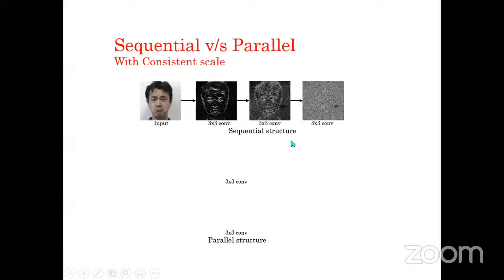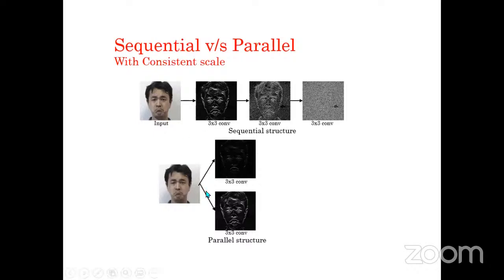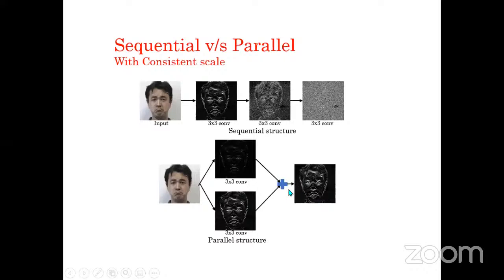An alternative is to use parallel structures instead of sequential ones. From a given input data, applying three different convolution filter operations in parallel gives different responses, and combining them provides better information. With parallel structures, you can preserve information and also reduce computation time.